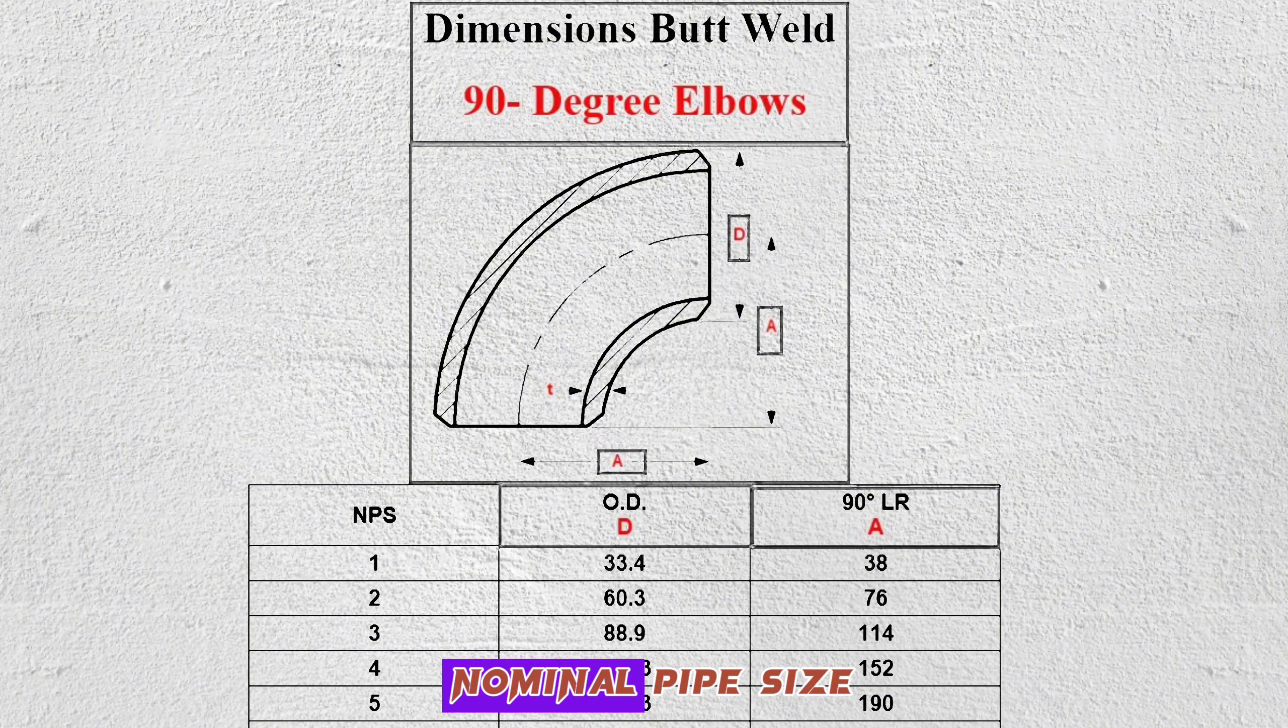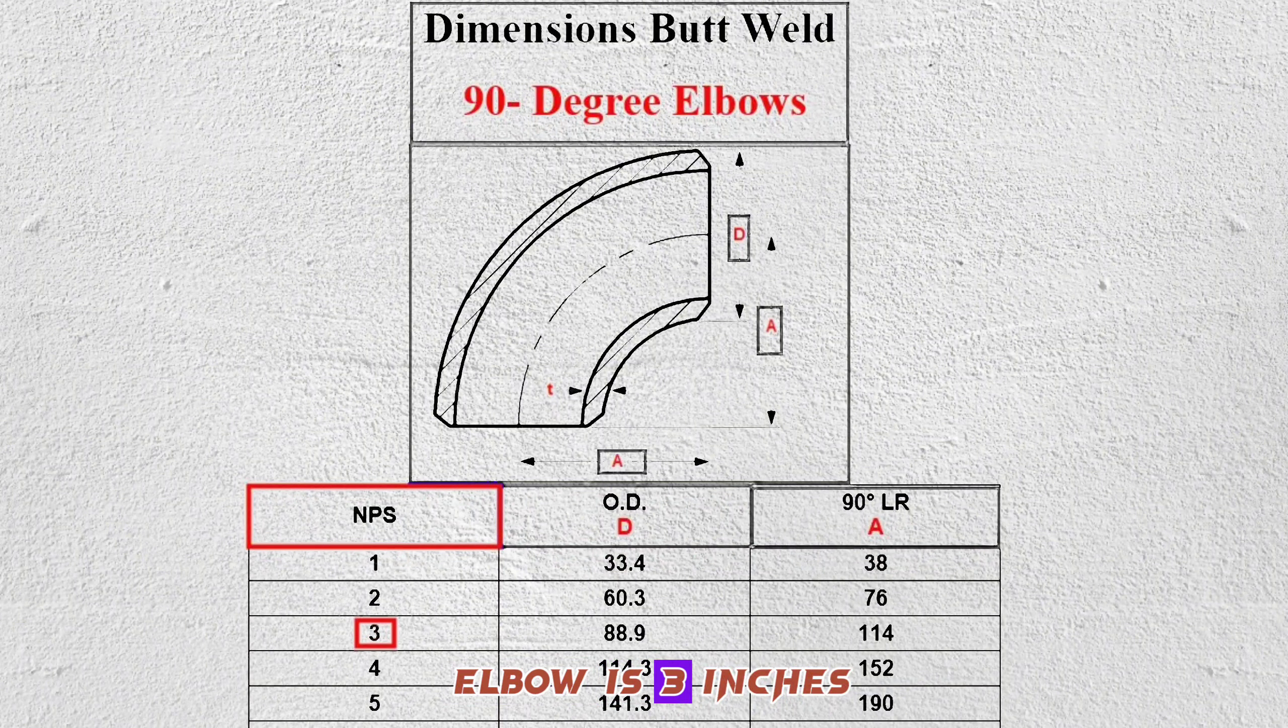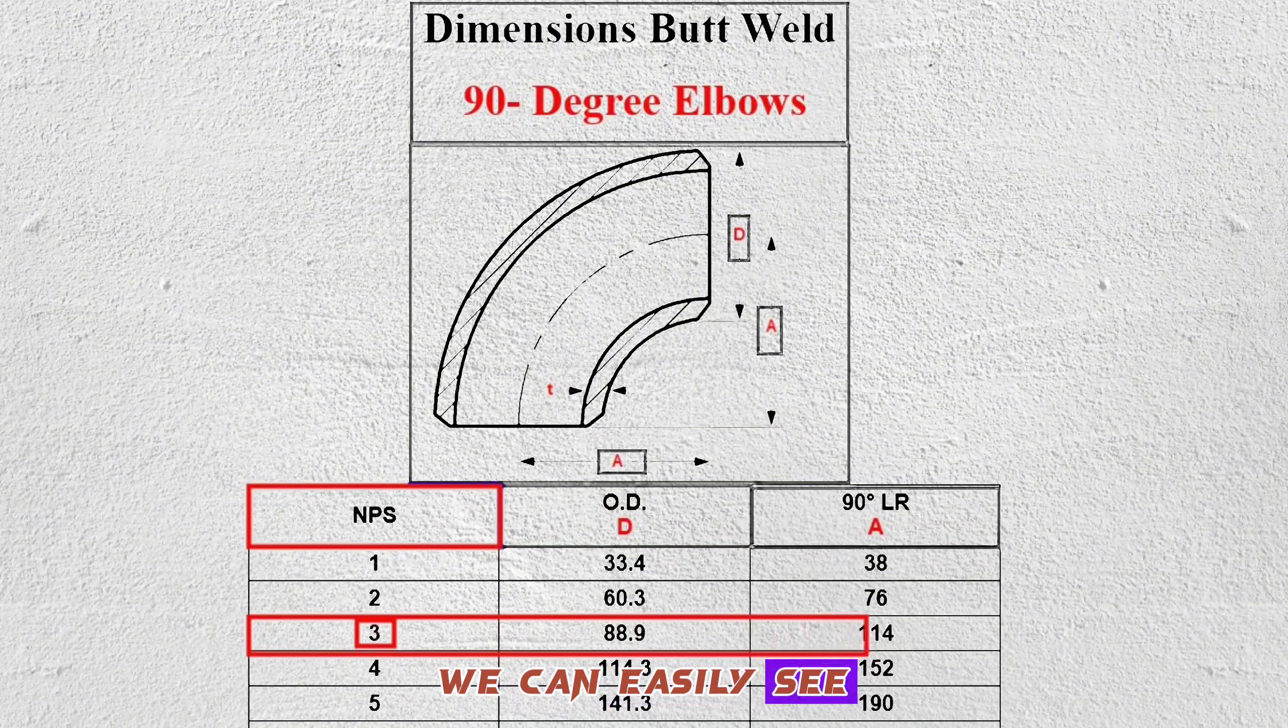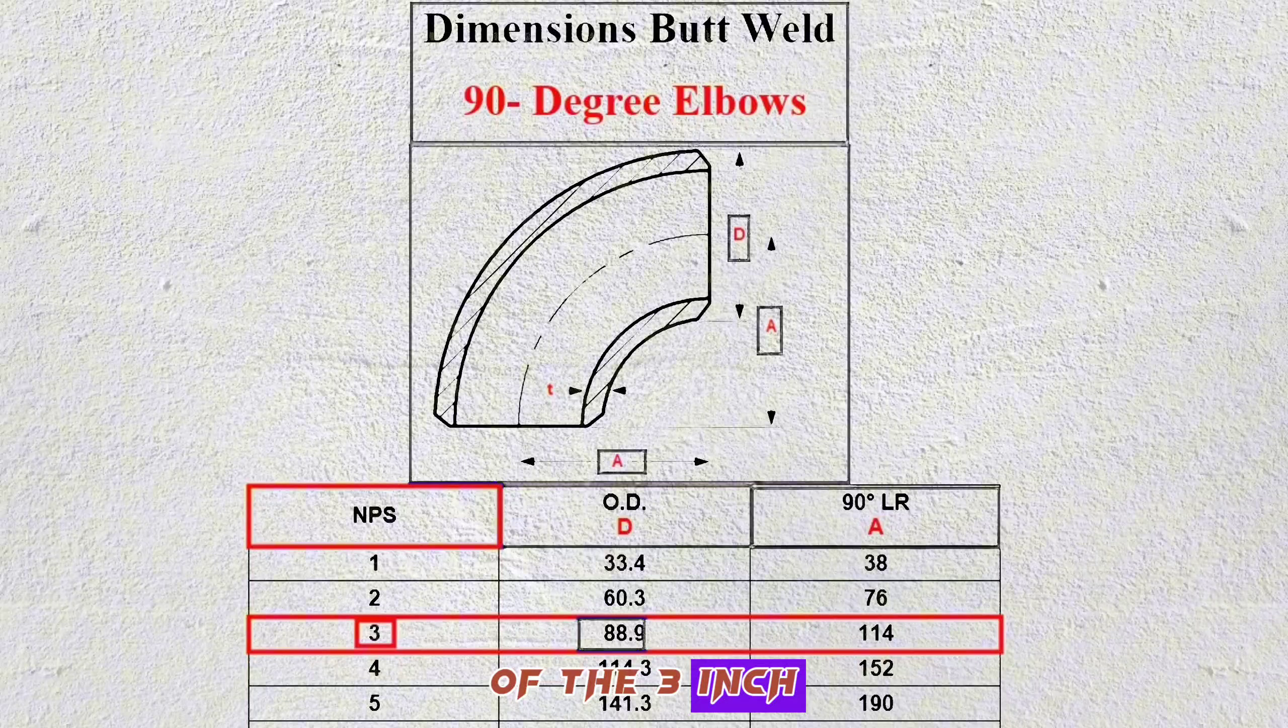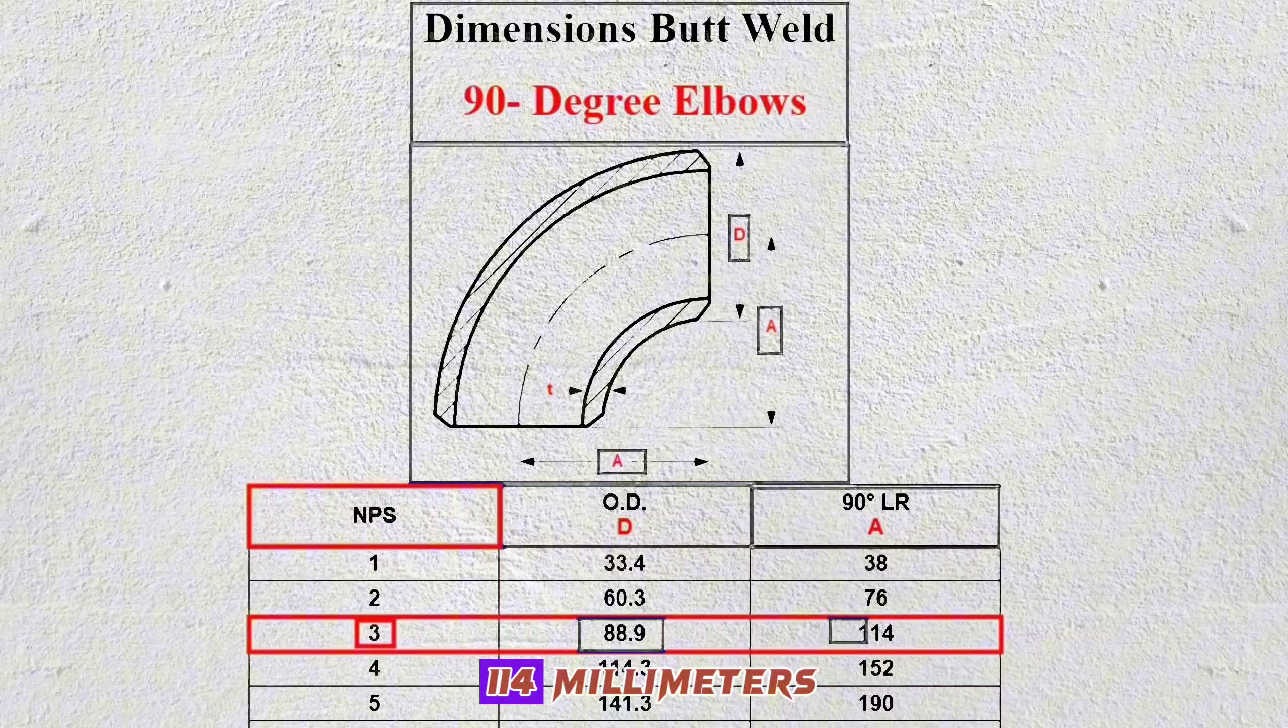NPS means nominal pipe size. In the example we are looking at, the size of the elbow is 3 inches. By looking at this chart, we can easily see that the outside diameter of the 3 inch elbow is 88.9 millimeters and the length is 114 millimeters.